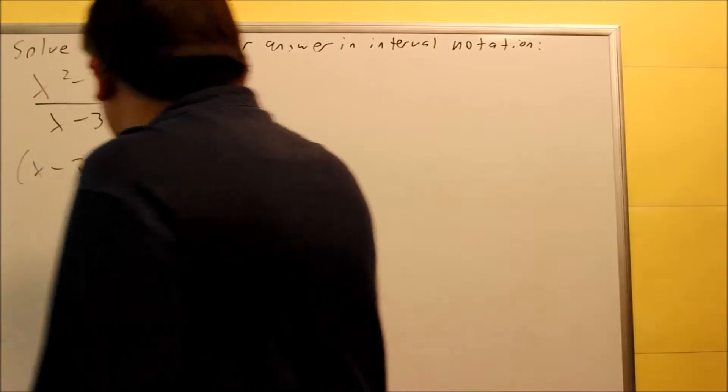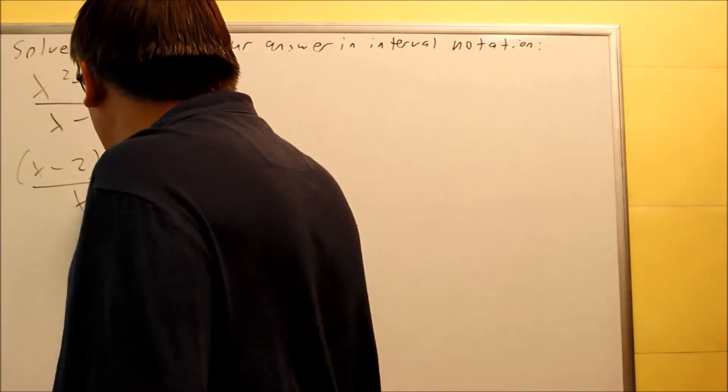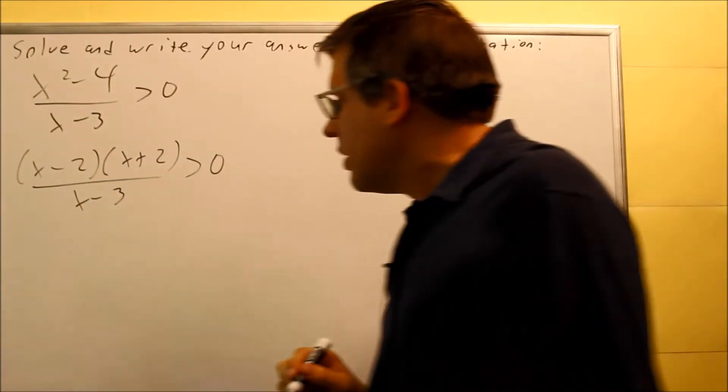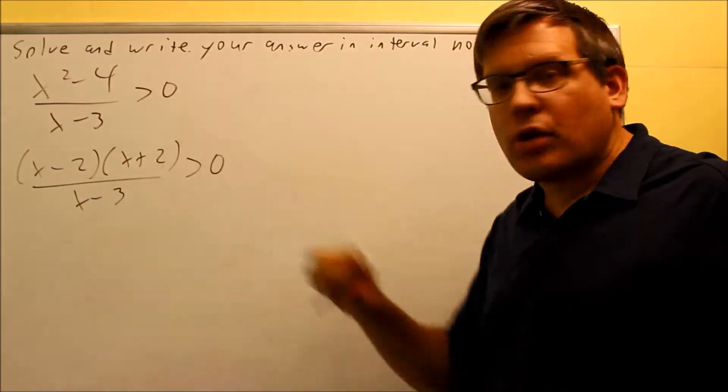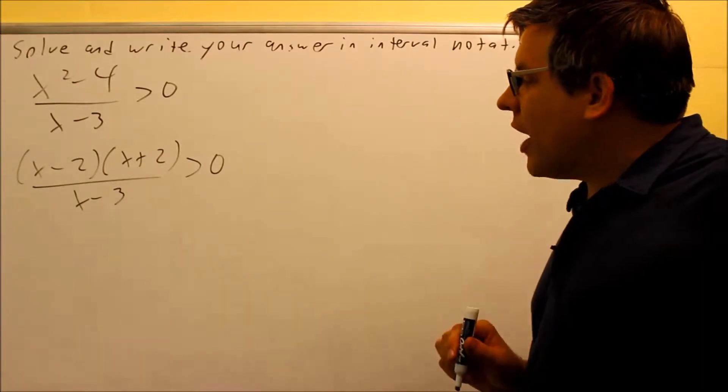We want to factor the top and bottom if necessary. So I get x minus 2, x plus 2, and I get x minus 3 down below greater than 0. So now we have it in the factored form. That was our difference of squares, minus 2, plus 2.